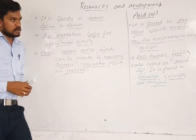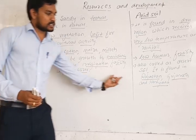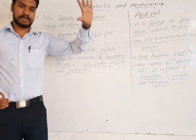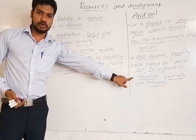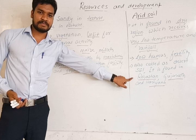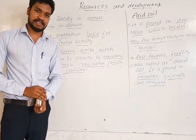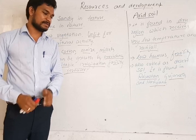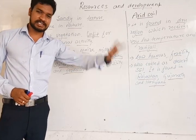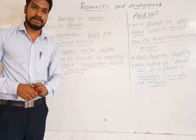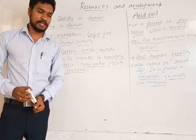This soil is mainly found in the western part of Rajasthan. There is only one river which flows in Rajasthan — we discussed this in 9th class, second chapter. It is also called a seasonal river. What is the name of that river? It is the Luni river.